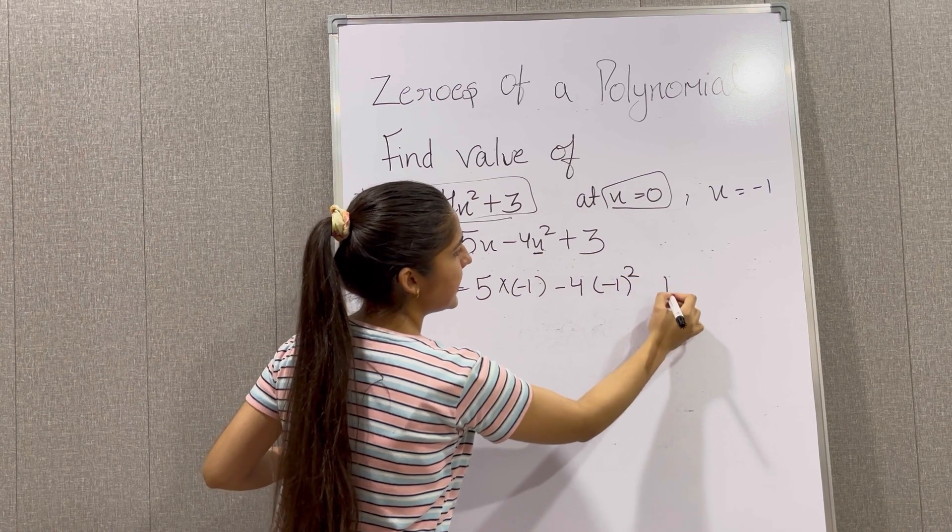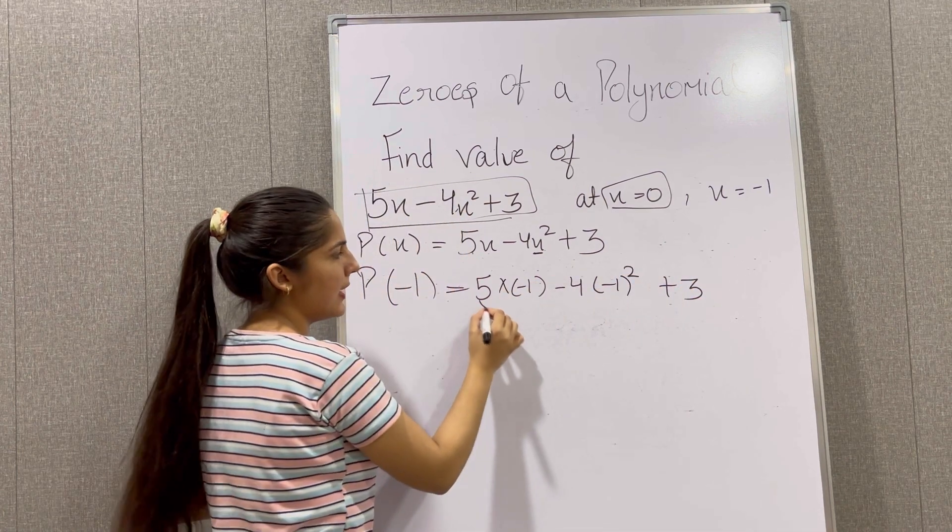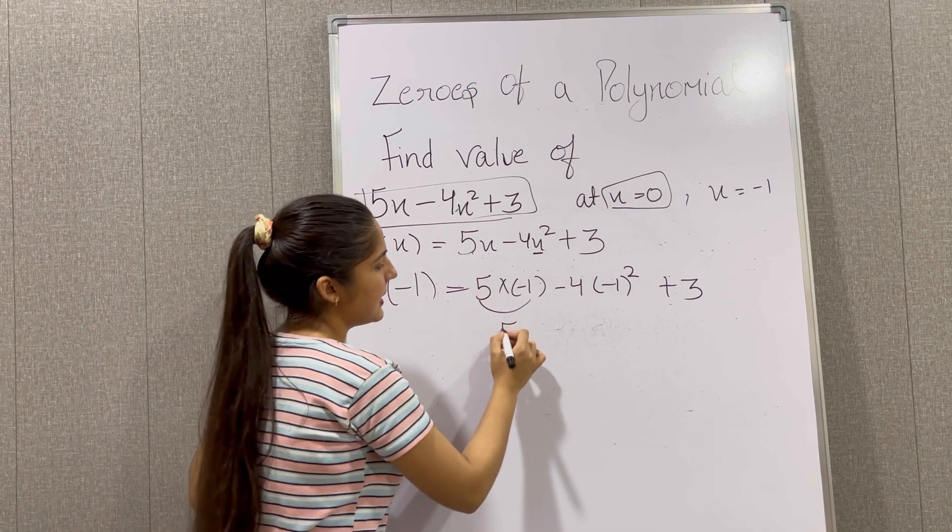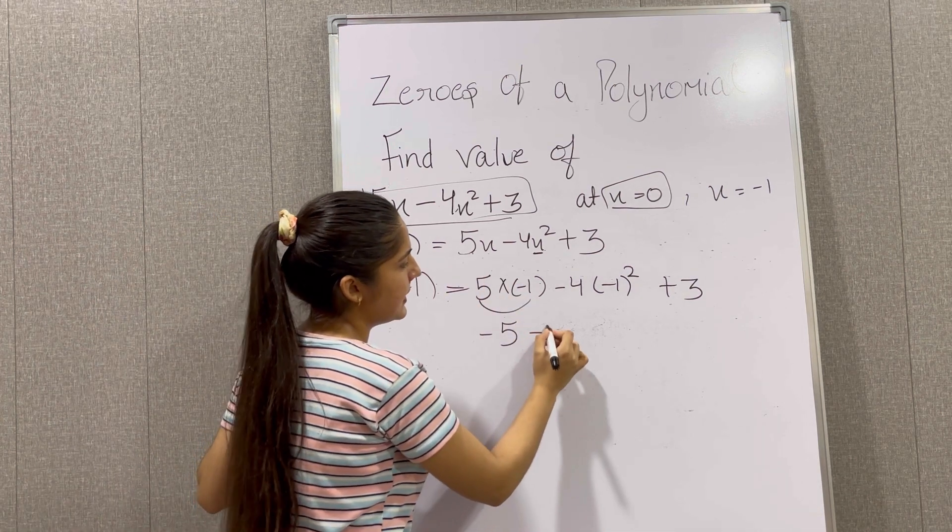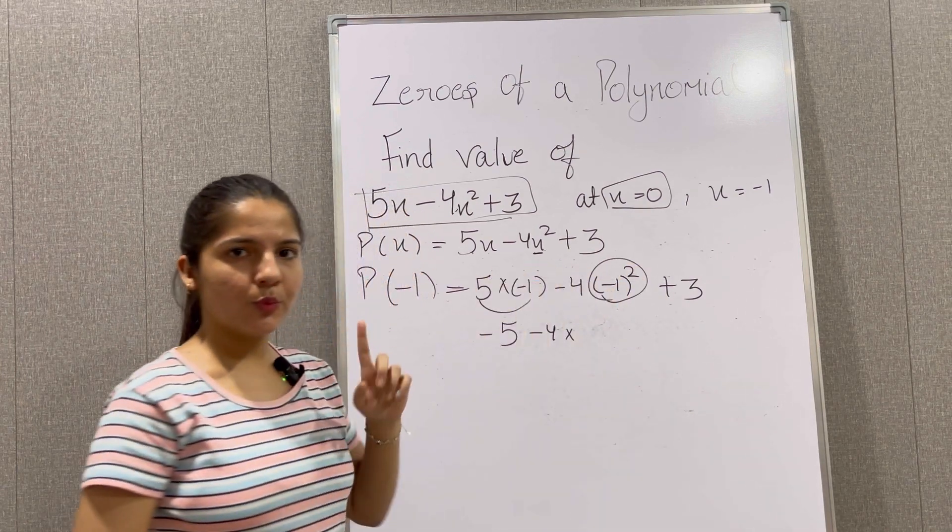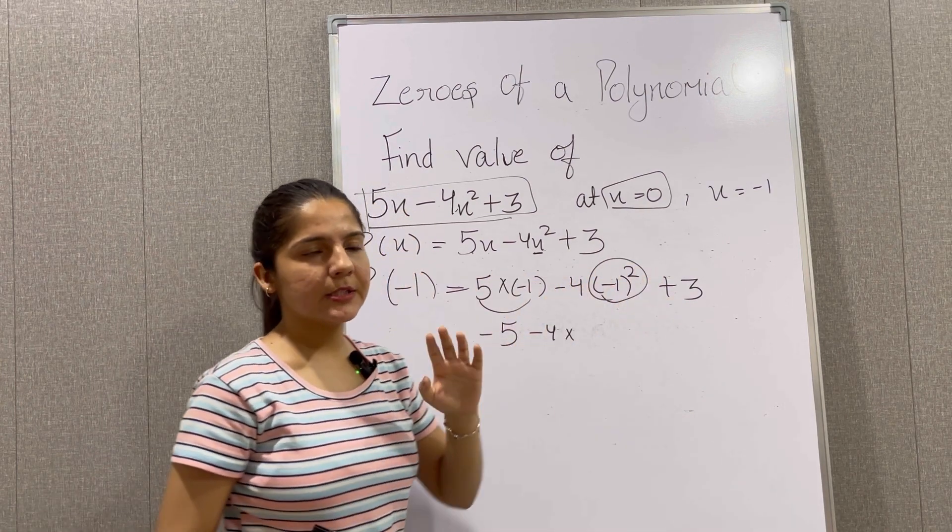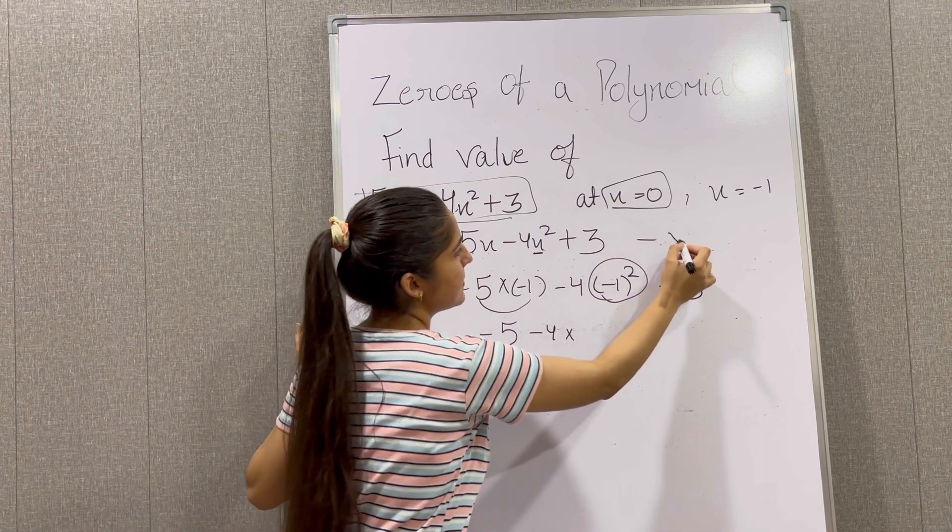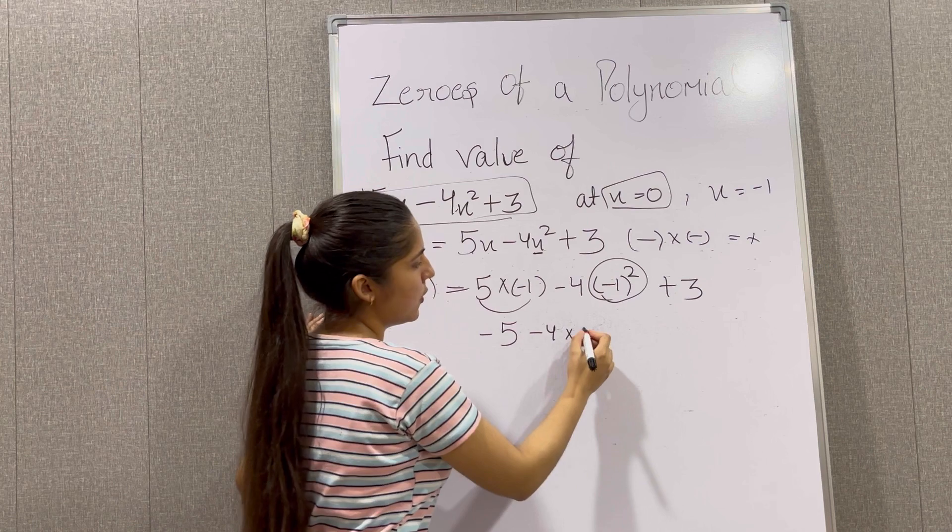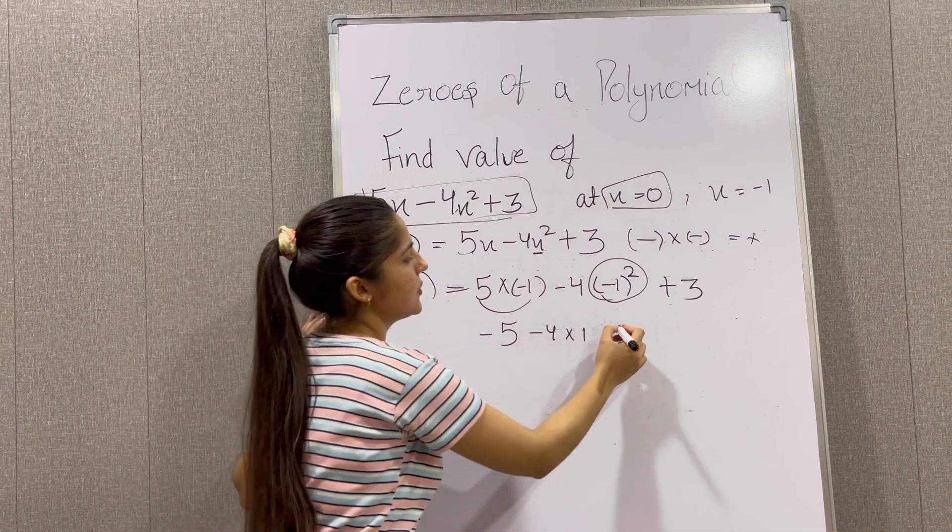Now 5 multiplied with minus 1, minus 4 multiplied by 1 whole squared is 1, and minus squared is plus because minus multiplied with minus gives us plus. So 4 multiplied by 1 plus 3.